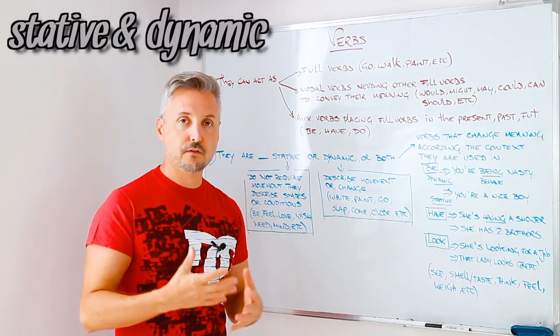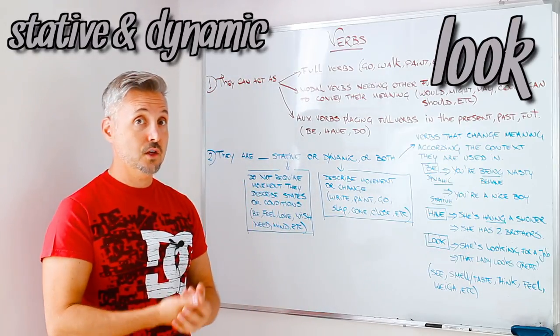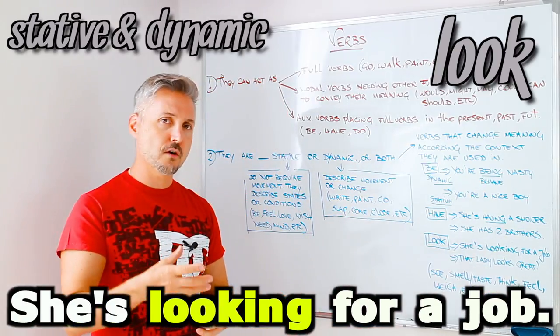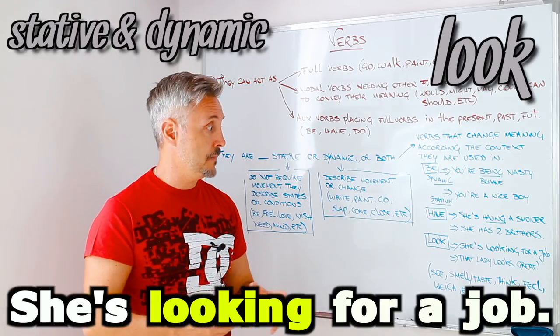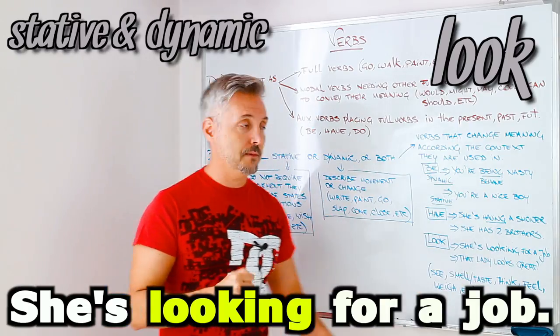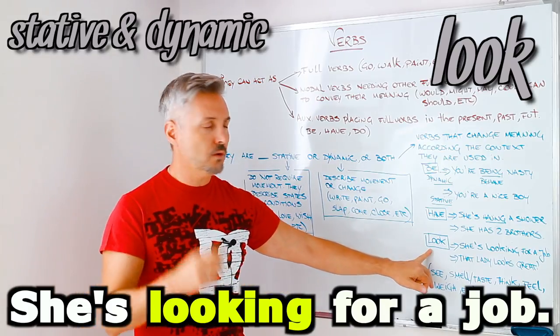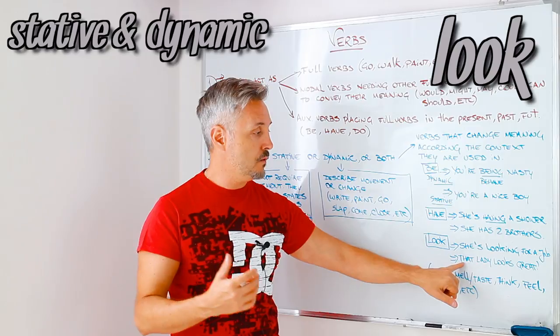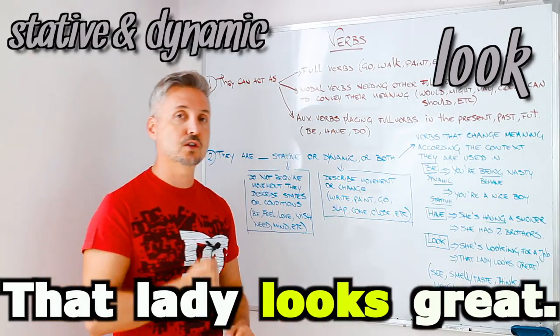Let's look at another verb, look. And, for a dynamic usage, she's looking for a job. To look for is to search, right? To look for is a phrasal verb. And, we're going to look at phrasal verbs in a minute. She's looking for a job. And so, this is a dynamic verb, in this case. So, for a stative case of the verb, we can say, that lady looks great. That lady looks great.